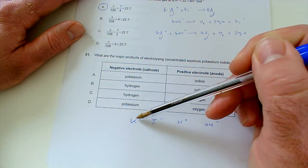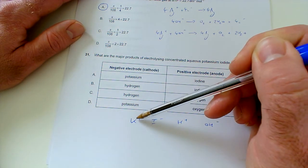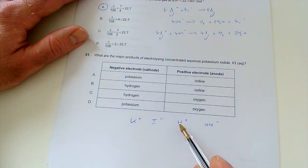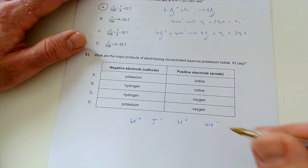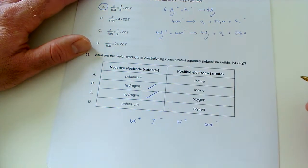Now, K+, potassium is more reactive than hydrogen, which means potassium is happier being a positive ion than hydrogen is. So, hydrogen is discharged in preference. We usually get hydrogen with aqueous solutions unless it's a very unreactive metal. So, that will be positive ions attracted to the negative electrode.